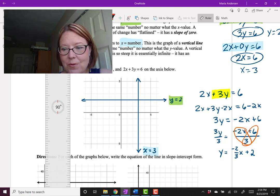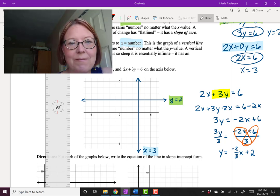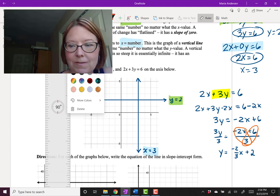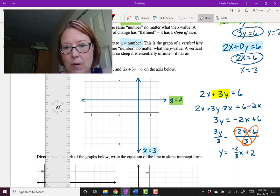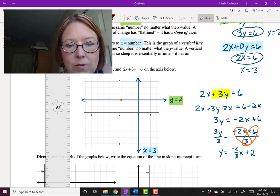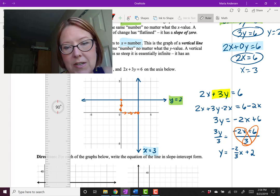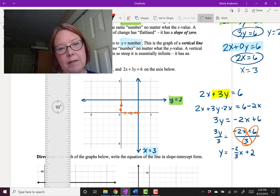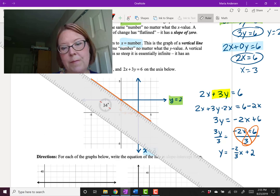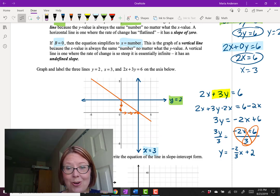Now we've got y equals negative 2 thirds x plus 2. Let's go ahead and graph that. I'm going to choose a different color for this graph. I'll do this one in orange. So my y-intercept is 2. I'll go ahead and plot that. And then my slope is negative 2 over 3. So I'm going to go down 2, 1, 2, and then right 3, 1, 2, 3. And that gives me another point. Go ahead and graph that line. This is a decreasing line. It passes through the y-intercept 0, 2, and the x-intercept 3, 0.